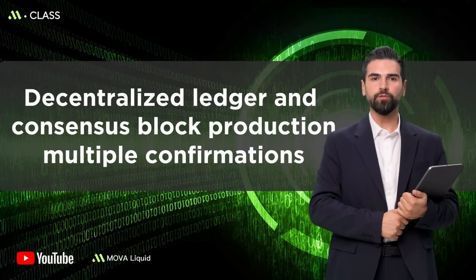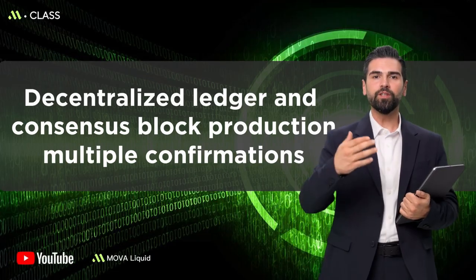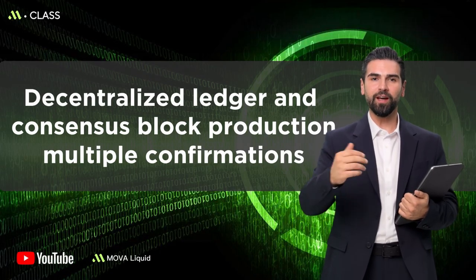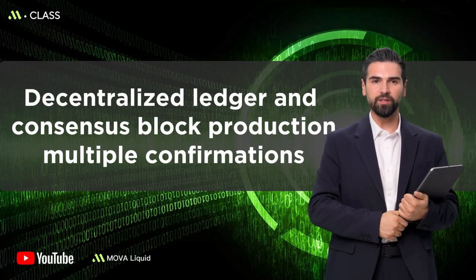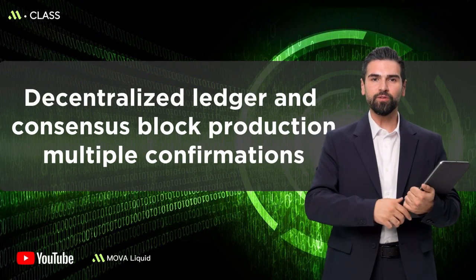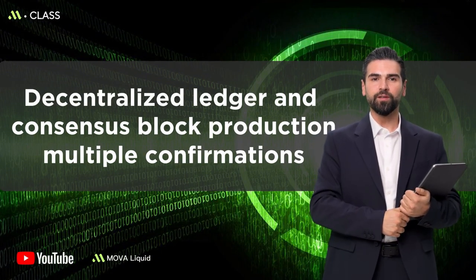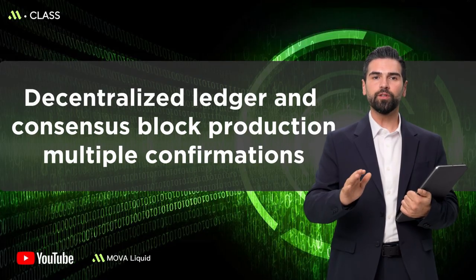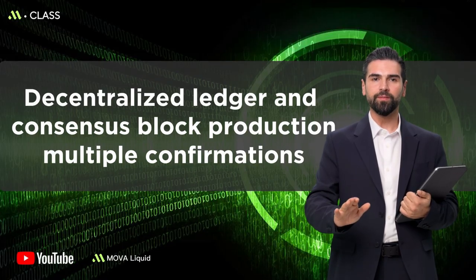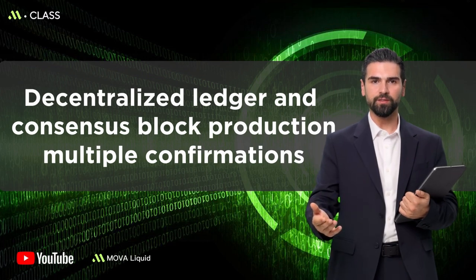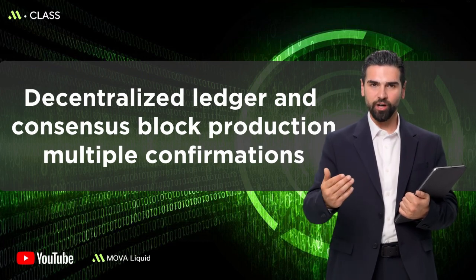Today, we used the three steps of ledger, consensus, and confirmation to explain how blockchain works. The shared ledger provides a unified truth, consensus ensures trusted block writing, and confirmation builds an irreversible boundary. I'm Jack, and this is MClass, guiding you from beginner to expert. Thanks for watching.